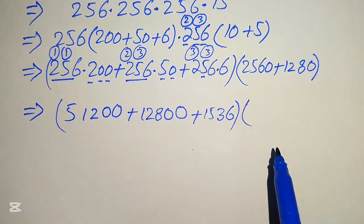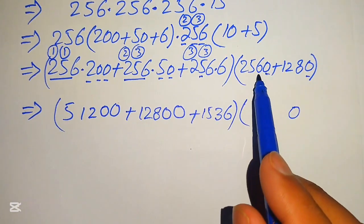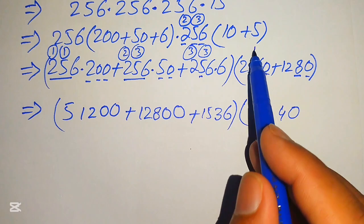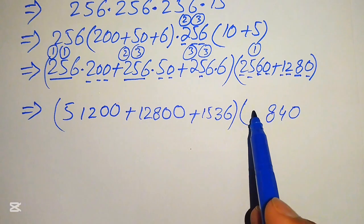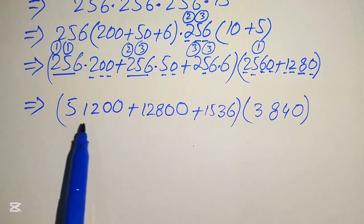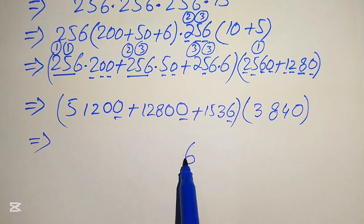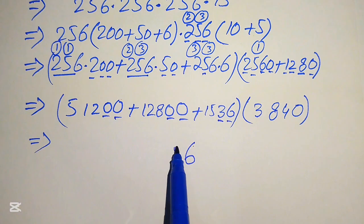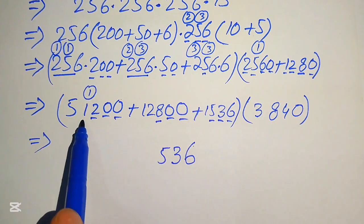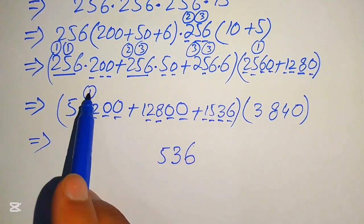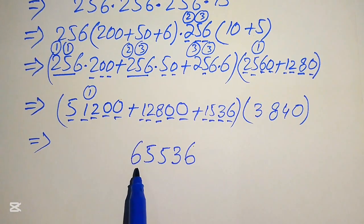Summing the partial products: 0 plus 0 is 0; 6 plus 8 is 14, write 4 carry 1; 5 plus 2 is 7, plus 1 is 8; 2 plus 1 is 3. Combining all three values: 0 plus 0 plus 6 is 6; 0 plus 0 plus 3 is 3; 2 plus 8 is 10, plus 5 is 15, write 5 carry 1; 1 plus 2 is 3, plus 1 is 4, plus 1 is 5; 5 plus 1 is 6. So 256 times 15 equals 65,536.